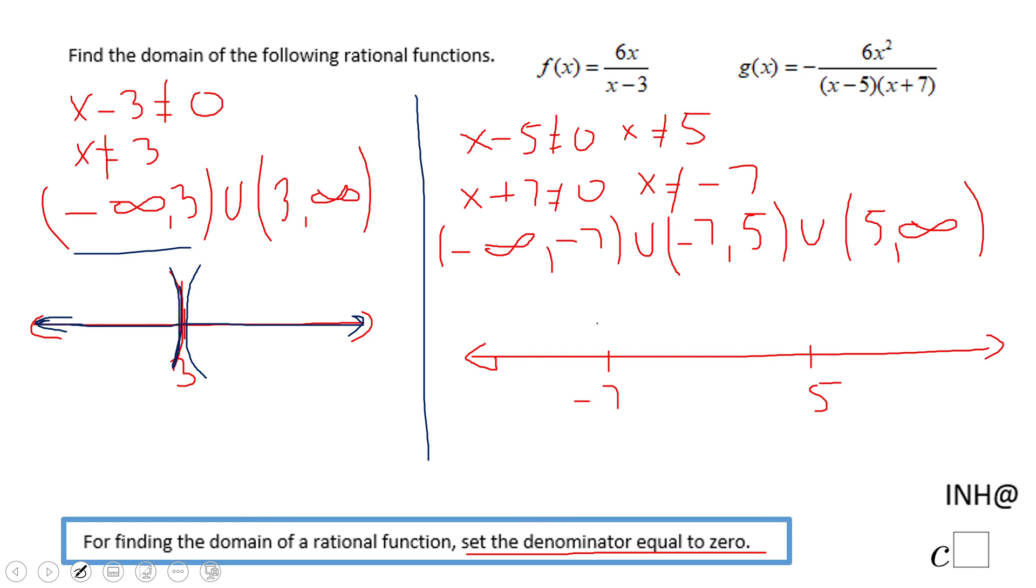I'm going to do parenthesis like this. This is the domain of this rational function, any number excepting 5 and negative 7. If you enjoyed this video clip don't forget to click the like button and come back to C Squared for more help. Thank you.